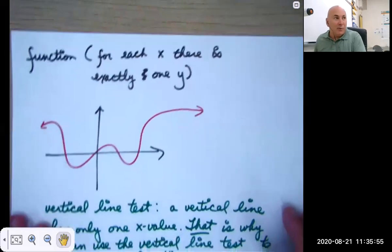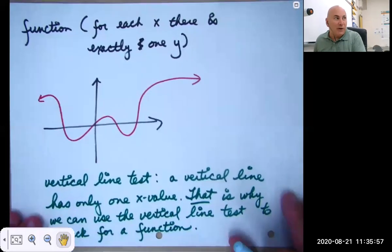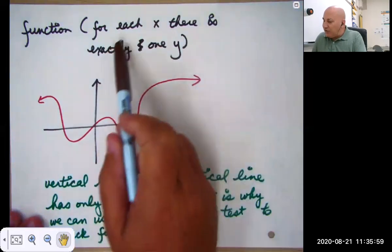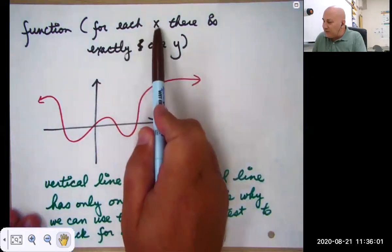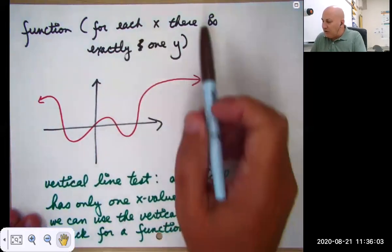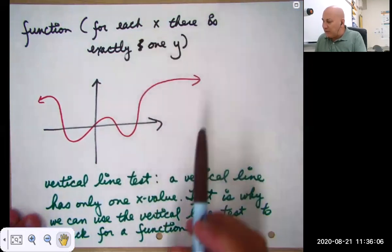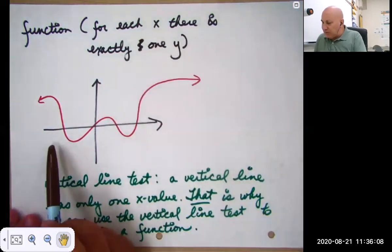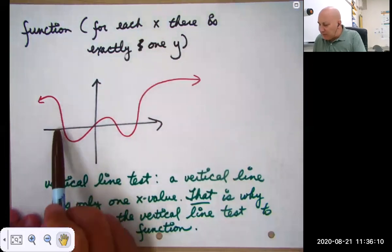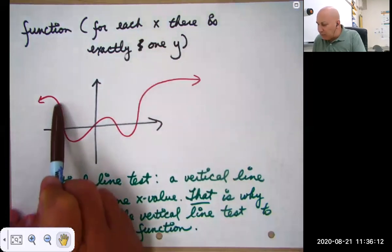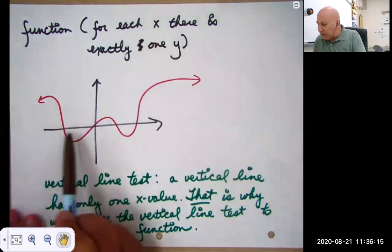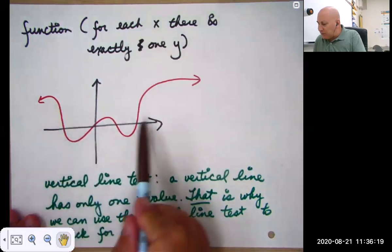Our definition of a function is a relation. And remember, a relation is just a set of points. It's a relation such that for each x on the function, there is exactly one y value. You'll notice that at this x value, there's only one point on the graph. There's only one point on the graph with this x value. There's only one point on the graph with this x value.